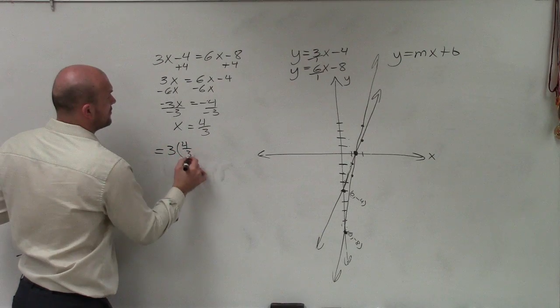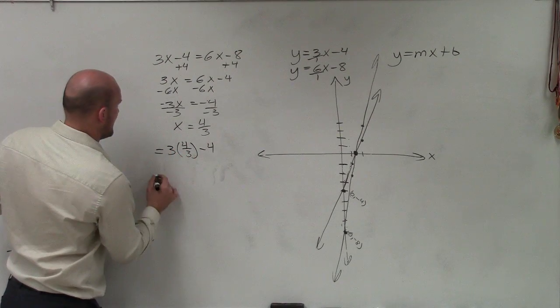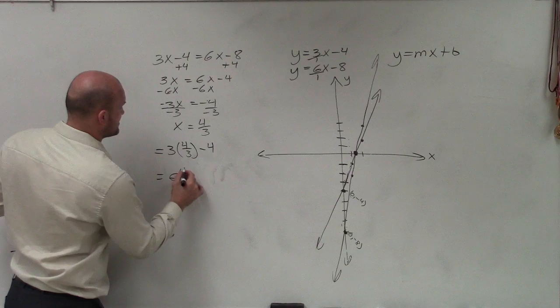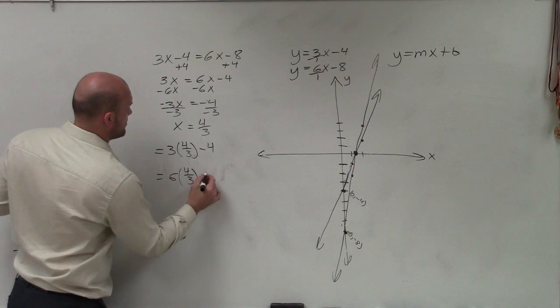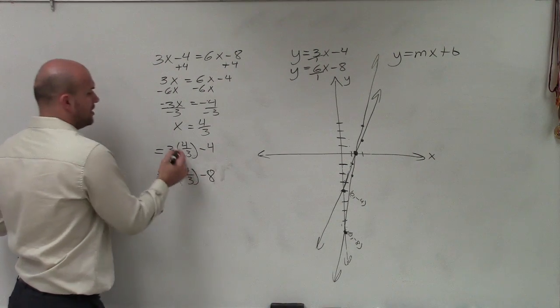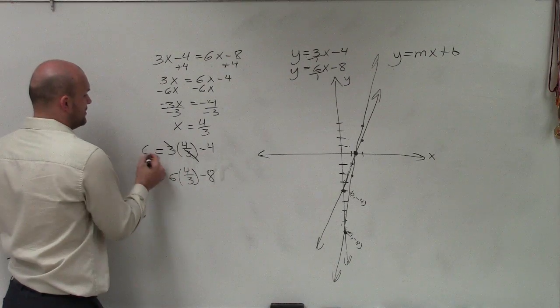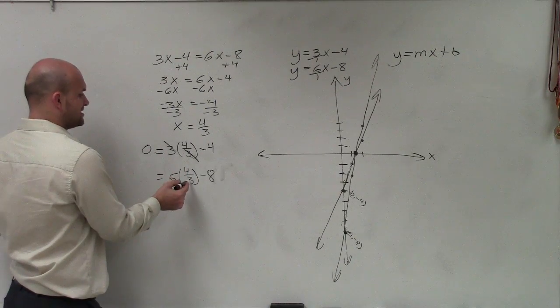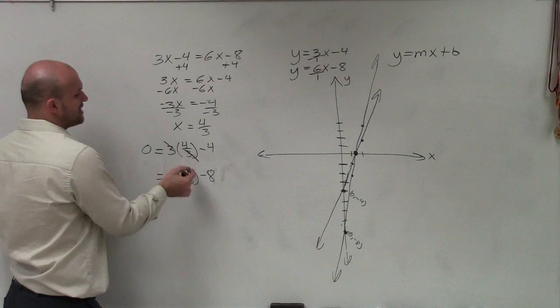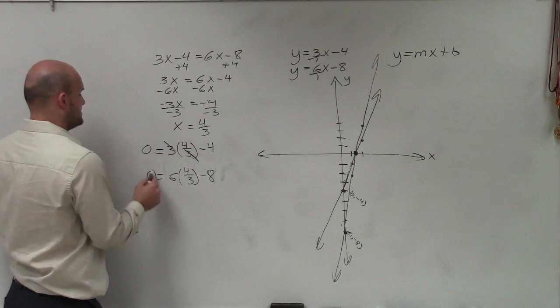So I'll do 3 times 4 thirds minus 4. And the same thing as 6 times 4 thirds minus 8. Well, here, those are the doubt, and that equals 0. 6, that's going to leave me 6 divided by 3 is 2. 2 times 4 is 8. 8 minus 8 is 0.